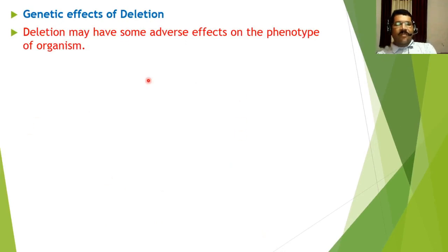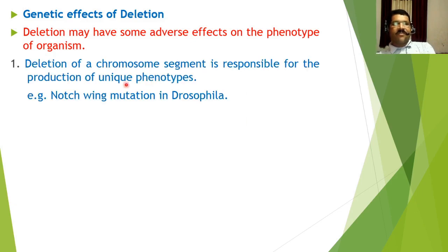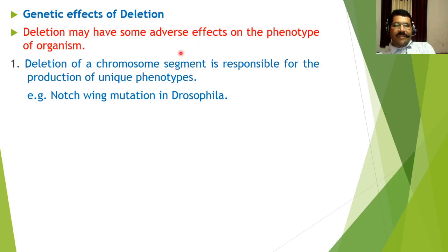Deletion may have some adverse effects on the phenotype of an organism. First, deletion of a chromosome segment is responsible for the production of a unique phenotype, because due to loss of that segment the genes present on it are lost, causing an altered phenotype to be expressed. The most common example of this is notch wing mutation in Drosophila.